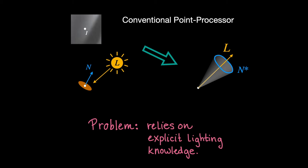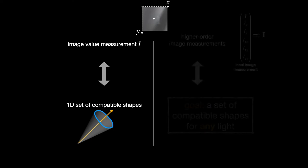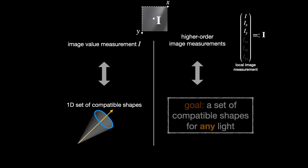Today, I'm presenting an alternative point processor for shading that may move us closer to human vision and towards monocular depth systems that are more robust and deployable. Instead of measuring just the intensity at a pixel, as in the traditional point processor, we could also measure the spatial derivatives of intensity at that pixel. As we'll see, this allows us to express the consistent local shapes without knowing the light source direction.